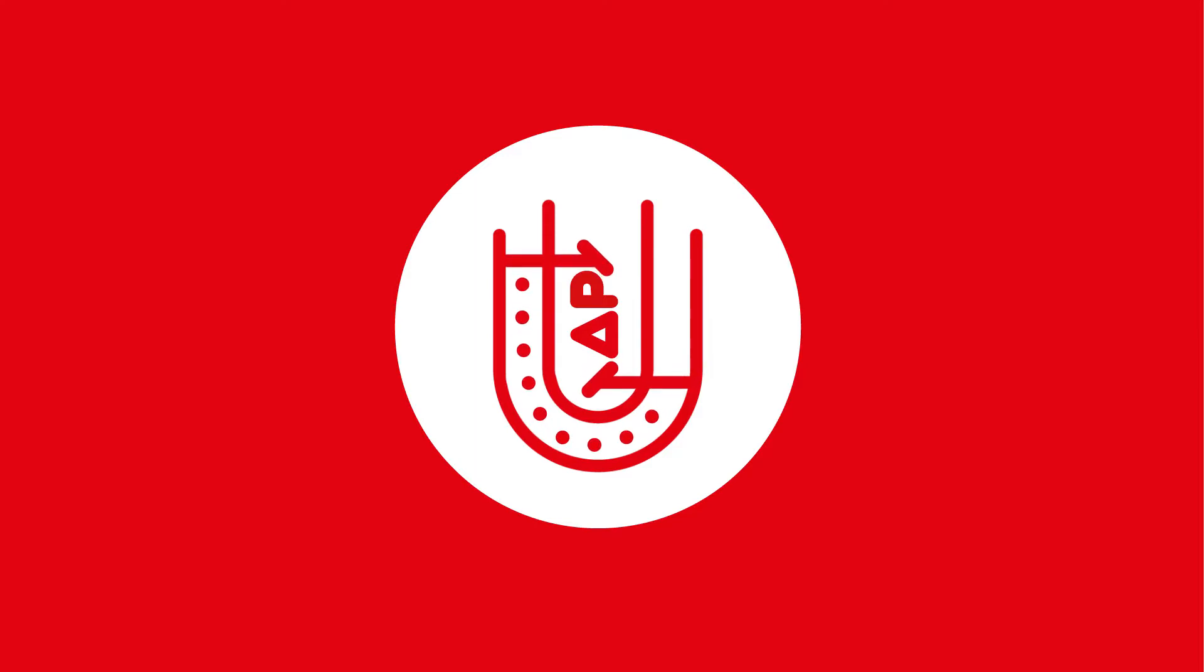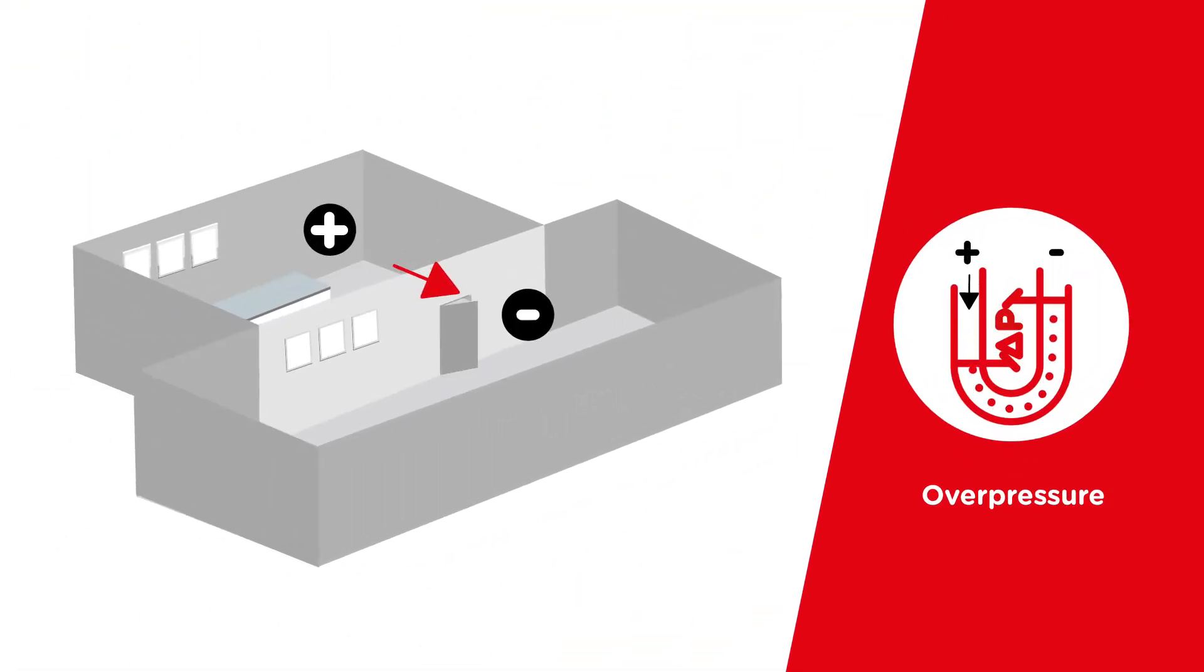Generating higher or lower pressure in a room generates a pressure difference. In the case of higher pressure, air will flow out of a room, thus preventing dust particles from entering.